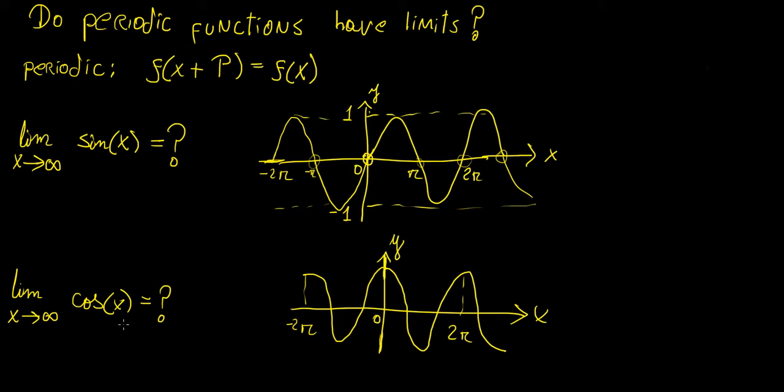Same thing happens with cosine of x. We're going to have that repetition happening every 2π intervals along the x-axis. And essentially these functions, these particular ones, have an amplitude of 1, which means that the maximum and minimum values are going to be 1 and minus 1.